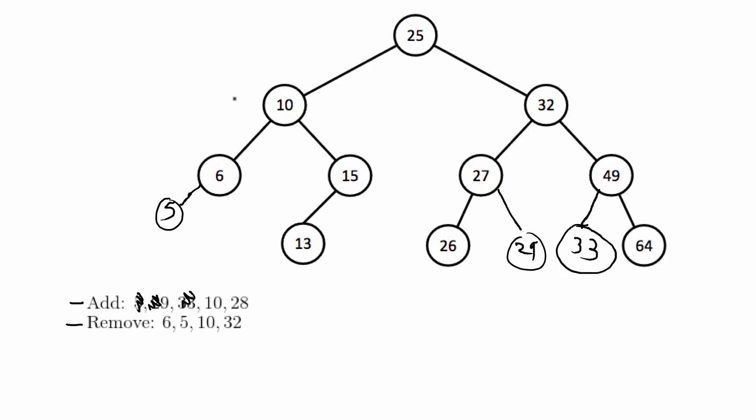10. 10 is already there so in binary search trees you do not add duplicates whereas in heaps you can, so we're done with that because 10 already is on the binary search tree.